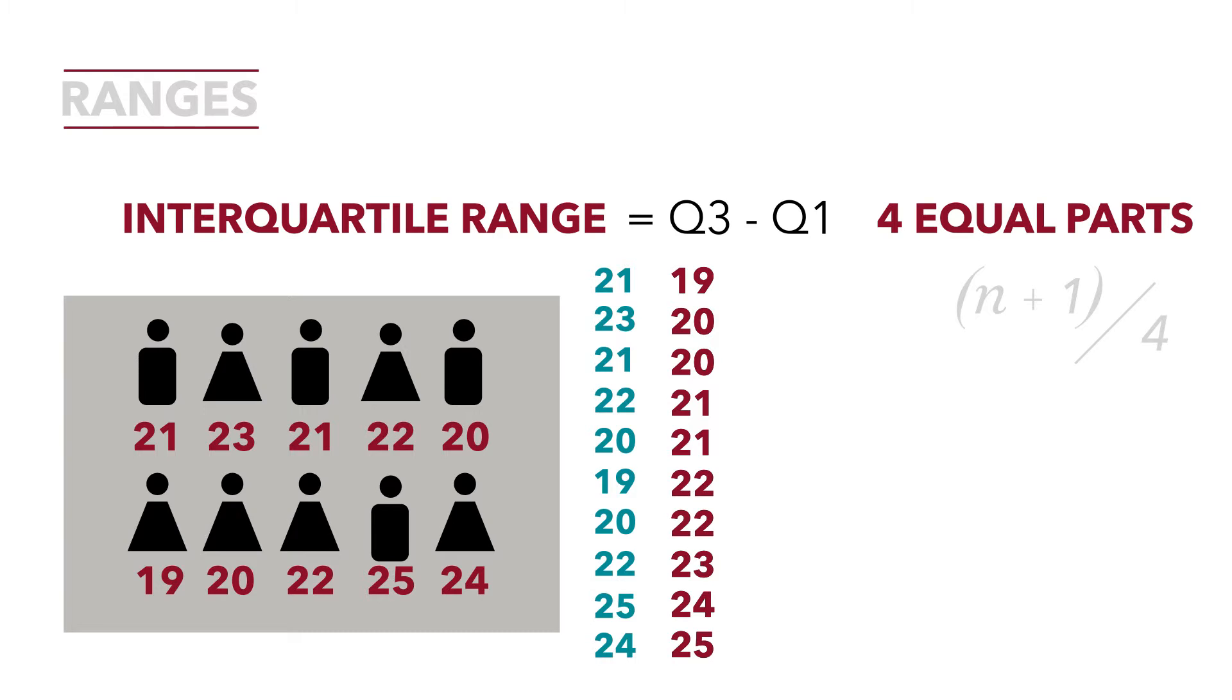So our n is 10. 10 plus 1 is 11 divided by 4 equals 2.75. So we're going to count by 2.75s in our data and find our quartile points.